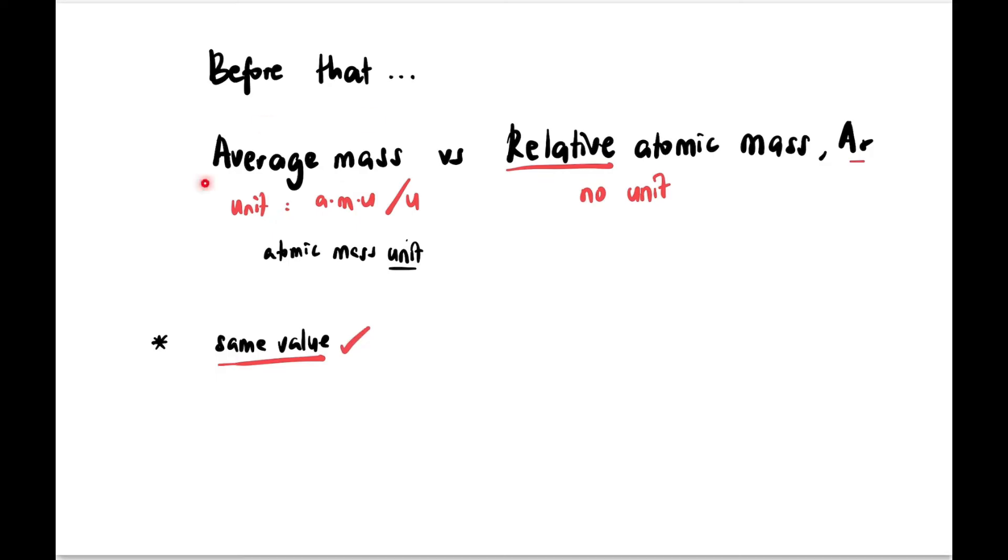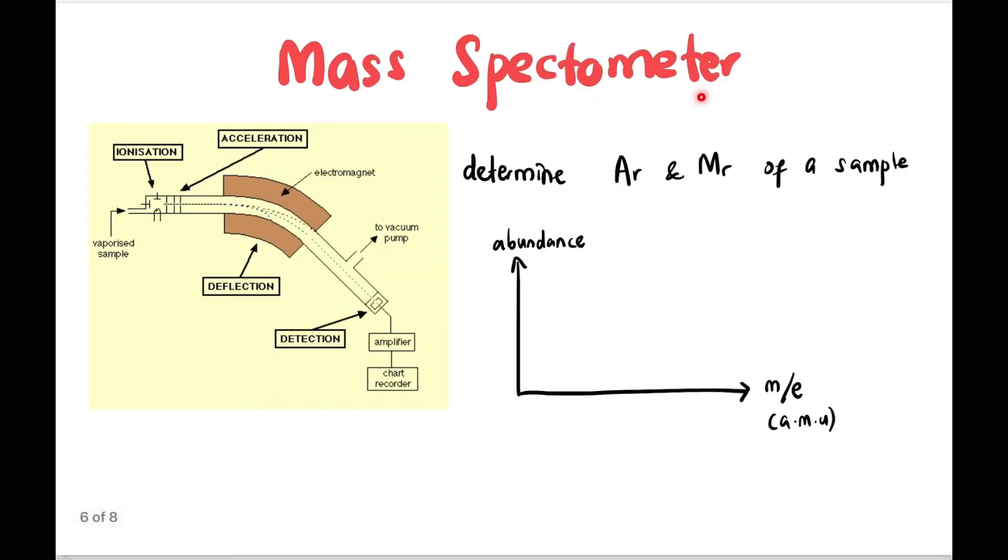Now, what is mass spectrometer? Mass spectrum is the instrument we use to obtain average mass of a sample. Basically, the sample that is vaporized undergoes ionization in gas form, then it is accelerated to a part where it is deflected by an electromagnet, then it is detected and the results are recorded.